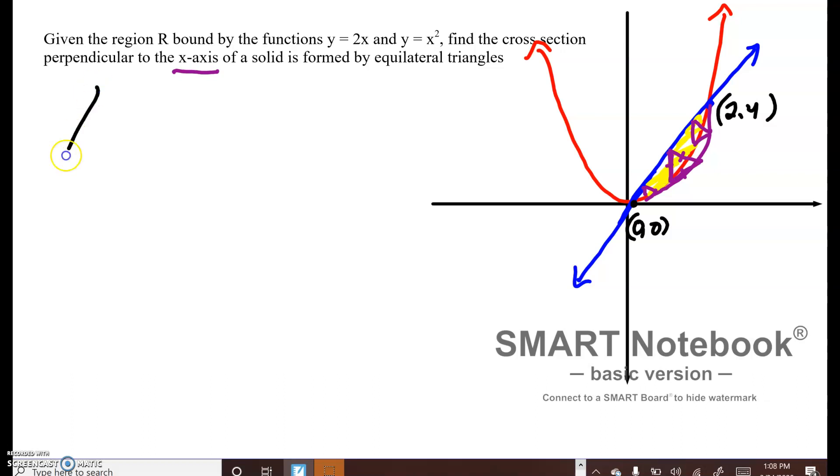See if I can do this in under five minutes. This vertical distance—whenever we do vertical distance, we do top minus bottom. The blue function is y equals 2x, and the red function is y equals x squared. When I do top minus bottom, it's 2x minus x squared. I'm going to call that b.